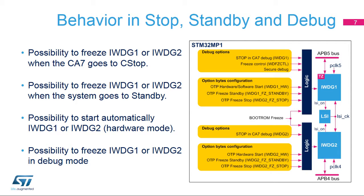The IWDG2 can also be frozen when one of the Cortex-A7 cores is in debug mode. Finally, when the boot ROM is executed, both IWDG2 are frozen, preventing the boot ROM from modifying the Watchdog settings.